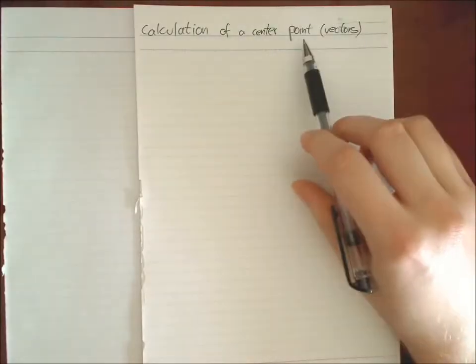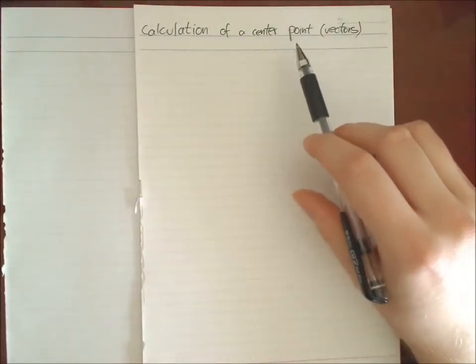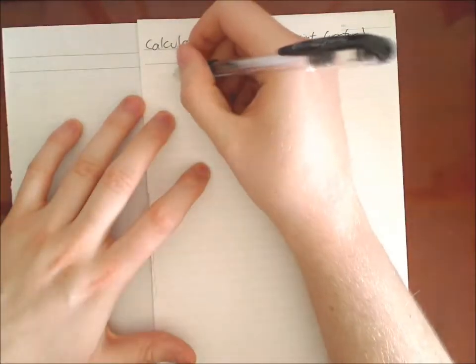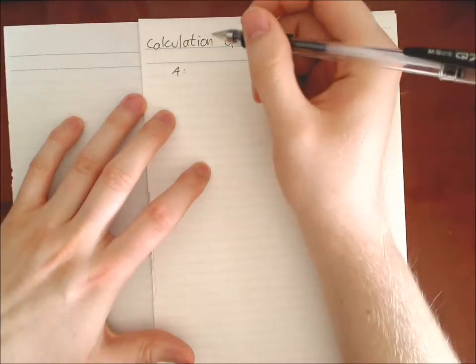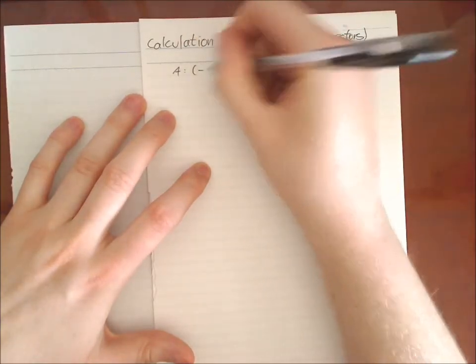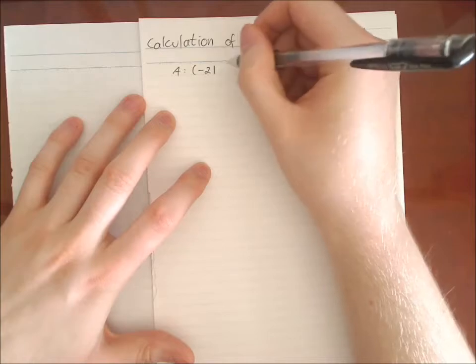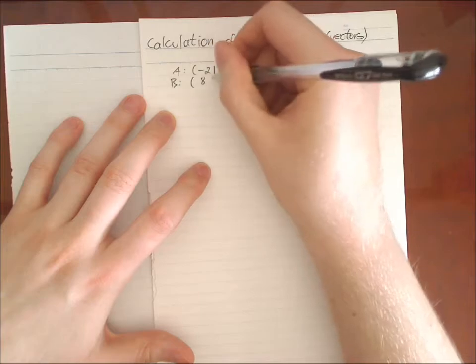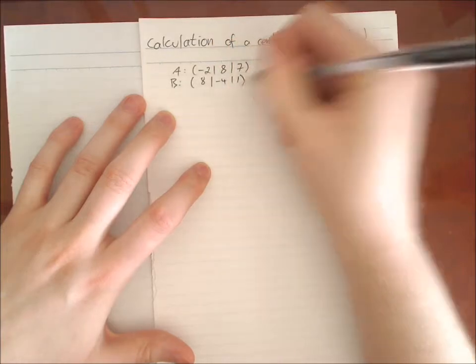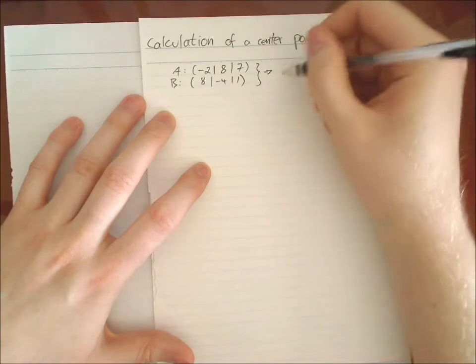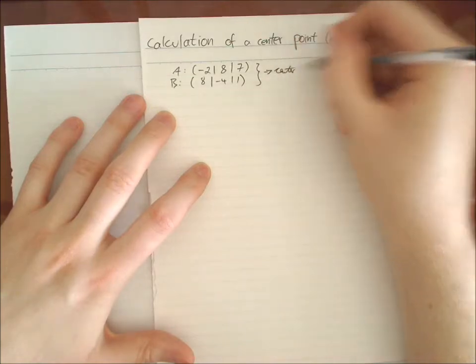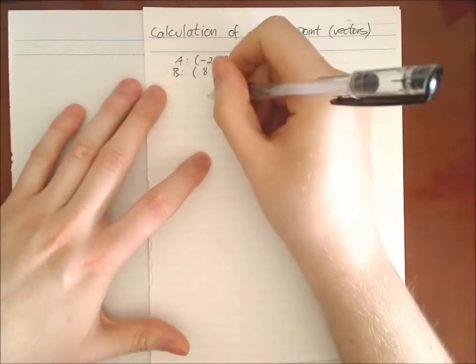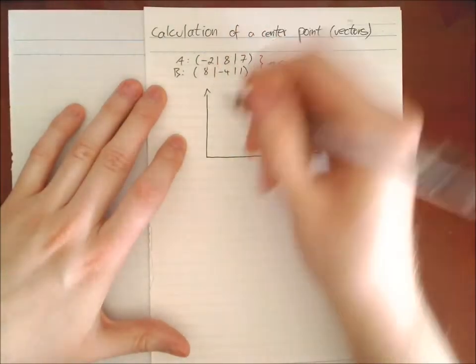How to calculate a center point between two points that are given. This is very easy. So I'm going to show you the principle with an example. So we have two points, which are A: minus two, eight, seven. And B is eight, minus four, one. The task is calculate the center point. But how does it work? This is very easy.